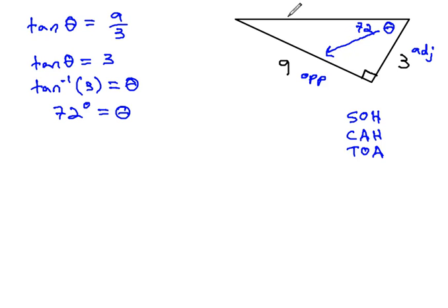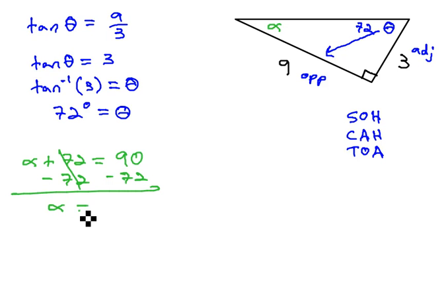First we know that the missing angle, let's call it alpha, and the other acute angle have to add to 90 degrees. Alpha plus 72 has to equal 90 degrees, so we'll subtract 72 from both sides. That leaves us with alpha is equal to 18 degrees.